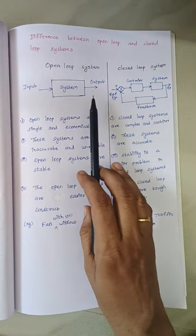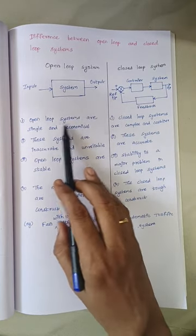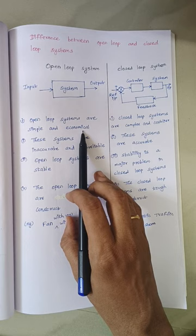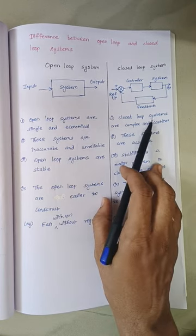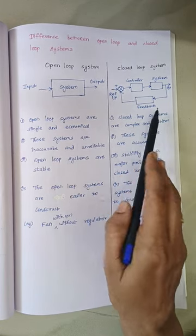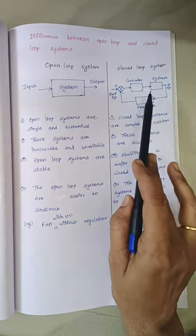From this diagram it is clear that open loop systems are simple and economical, whereas closed loop systems are complex and costlier because they involve more components.